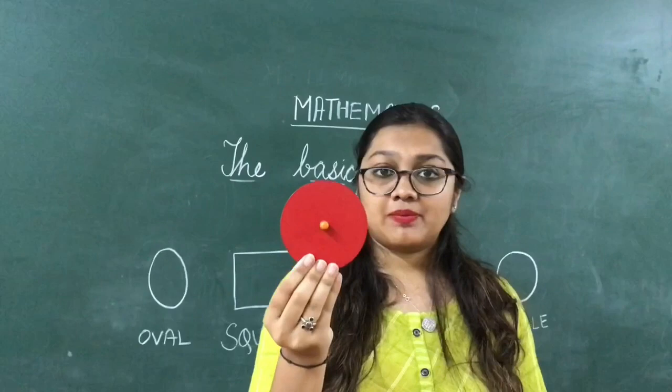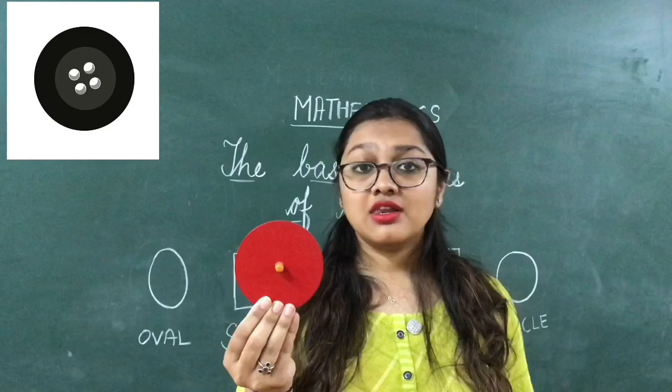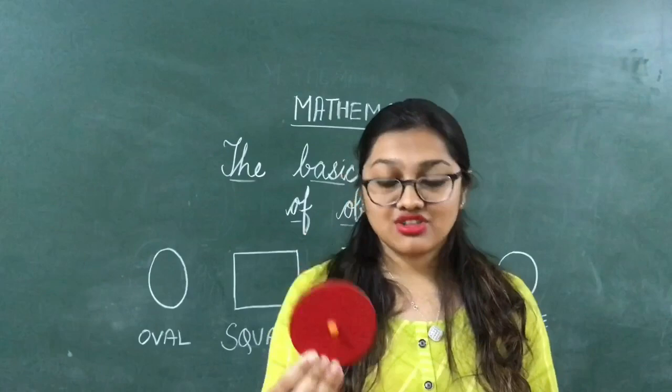Which is this shape? Circle. What object comes to your mind when I say circle? Button, ball, and coin.